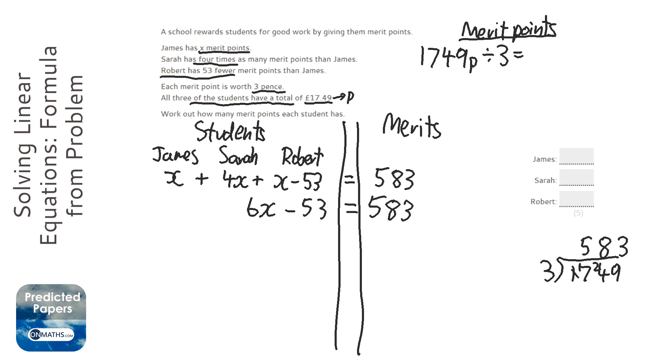Now when we solve equations, we always get rid of the plus or minus first, as long as there's no brackets or fractions. So to get rid of that minus 53, I need to do the opposite, which is add 53.